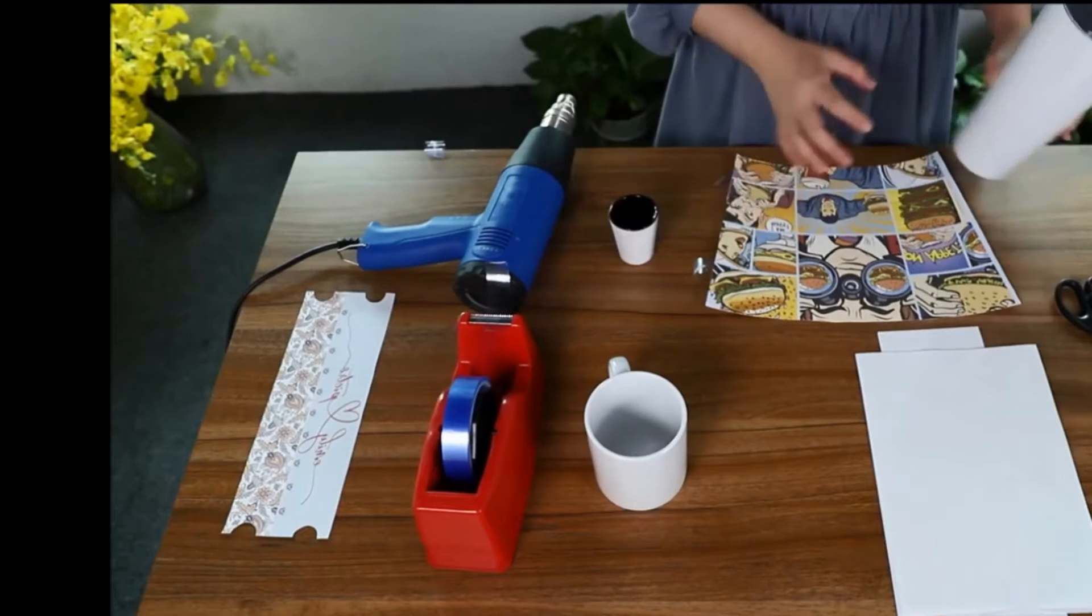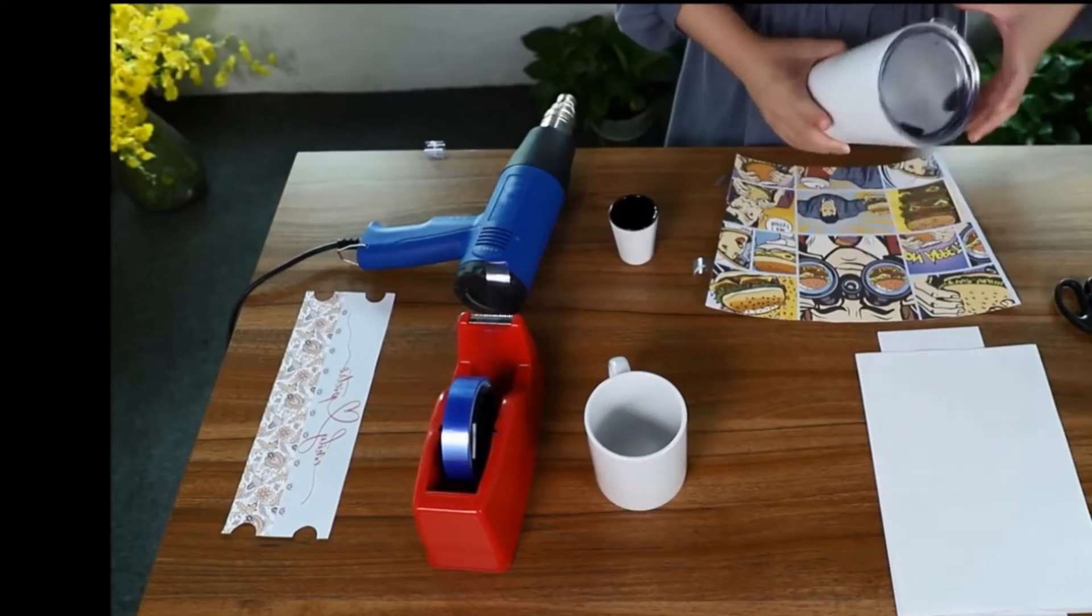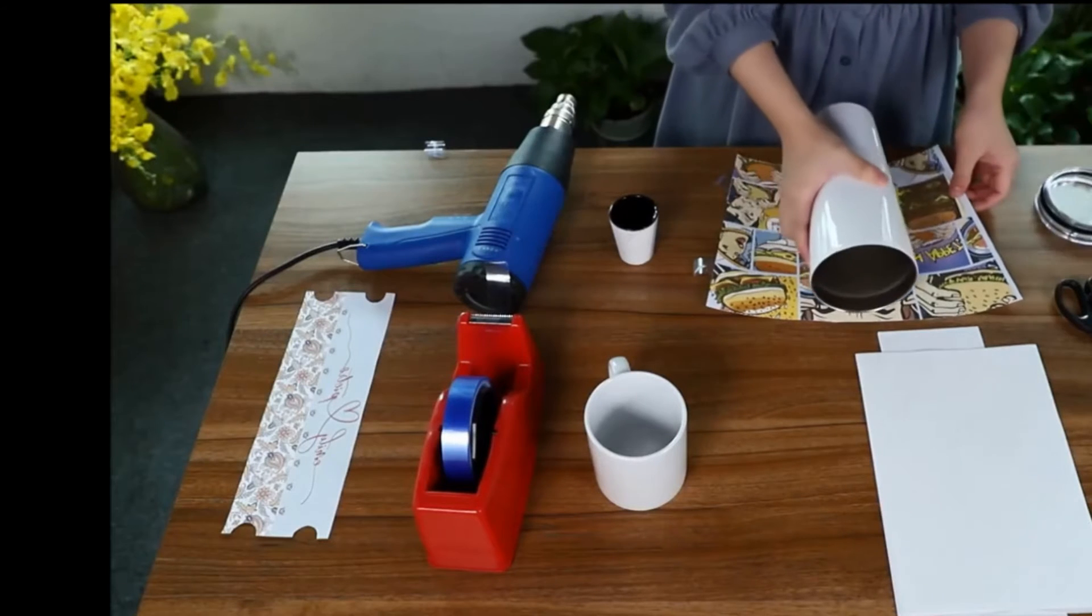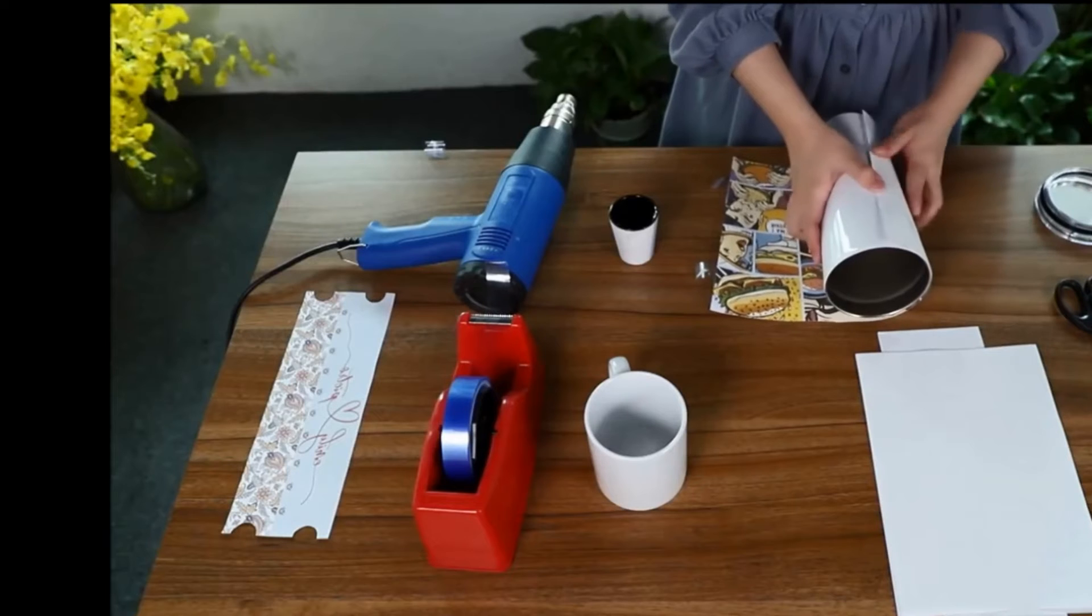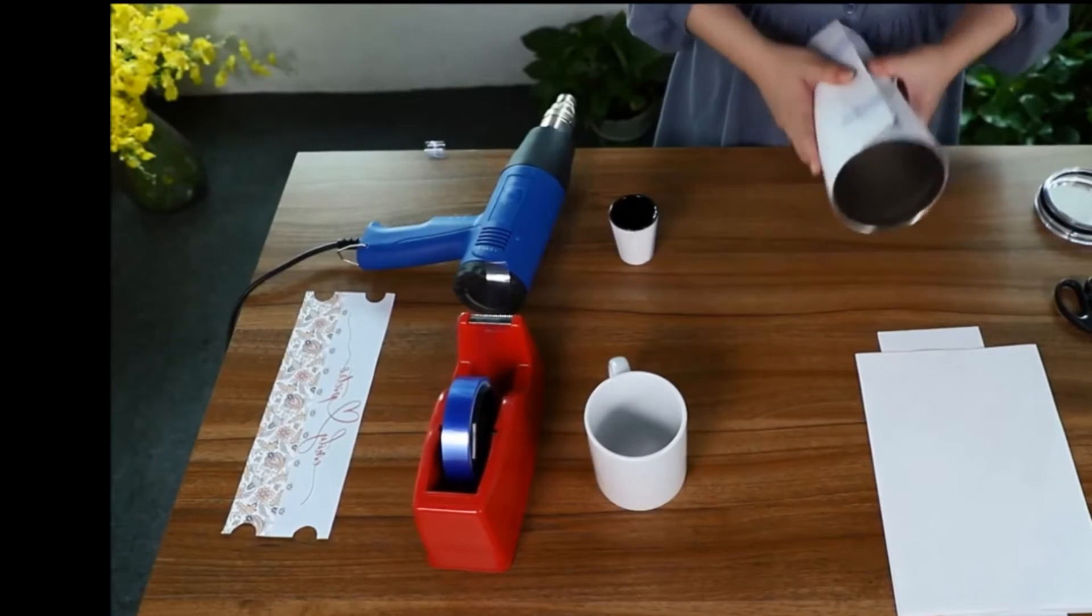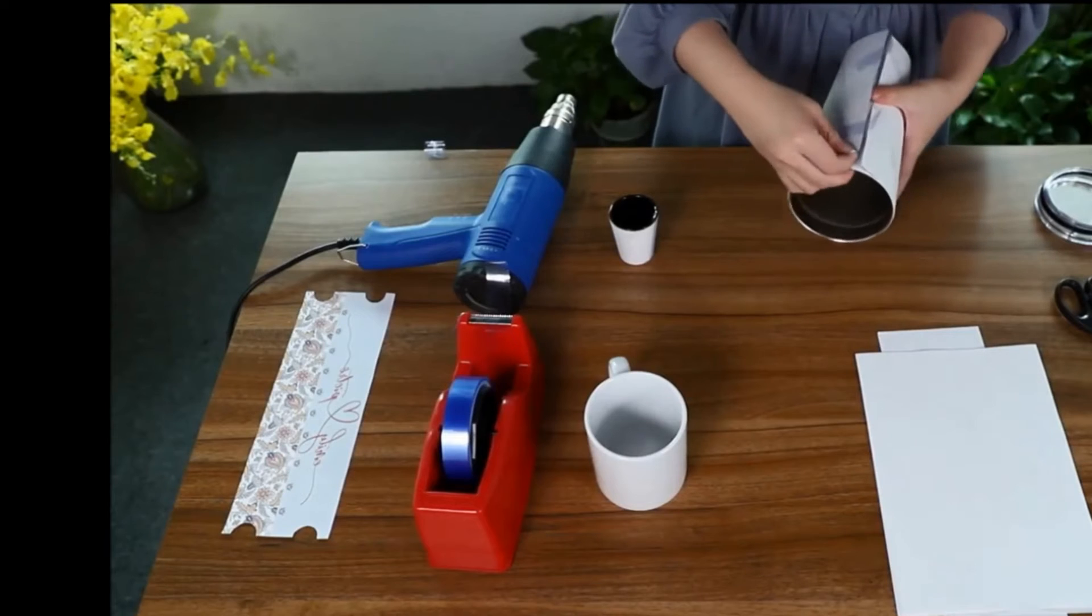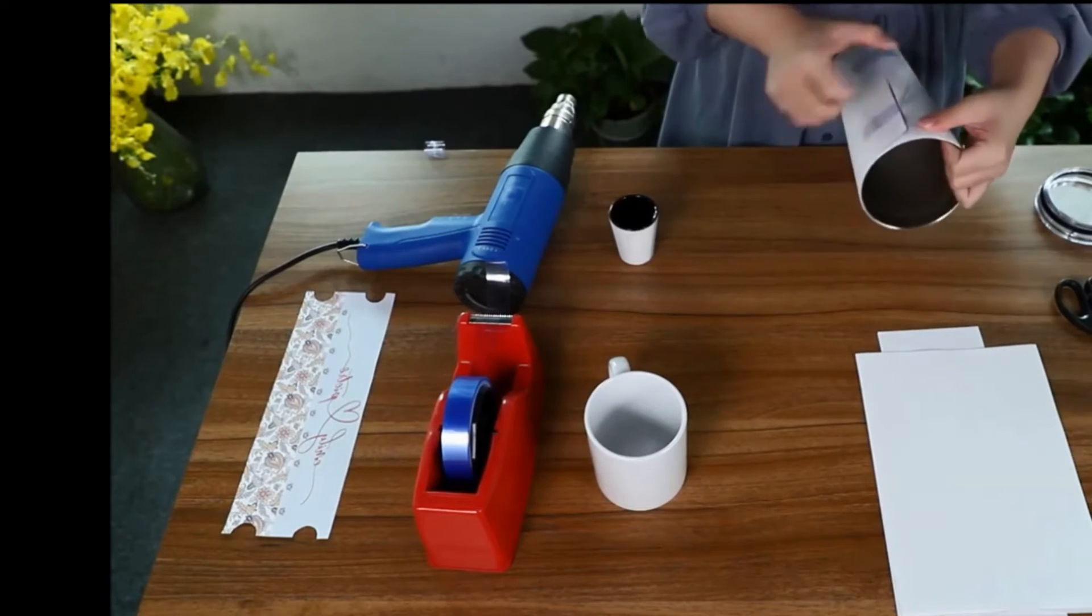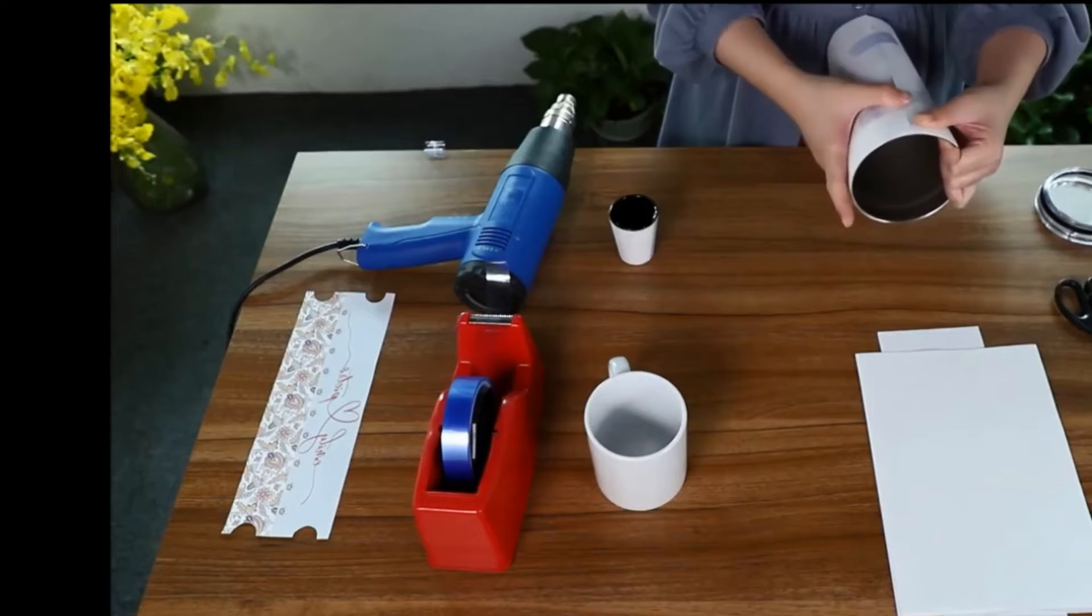It's the same for the large tumbler. But please be sure to take off the lid first. Now I can wrap it with the images and tape the image down.